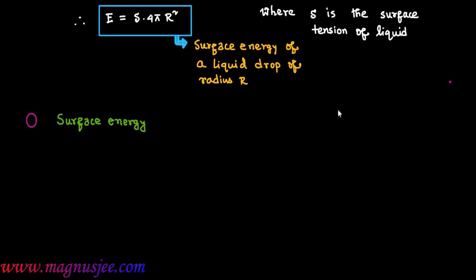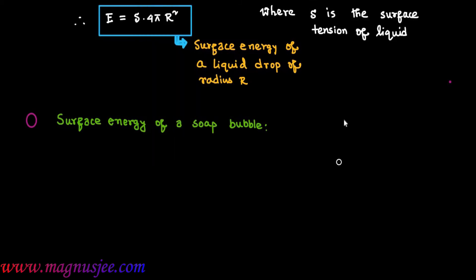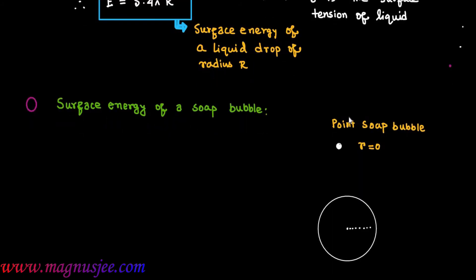Now we have to find the expression for the surface energy of a soap bubble. In the diagram, we first consider a point soap bubble of initial radius small r equals 0. Now it is blown into a large soap bubble of radius capital R — a point soap bubble blown into a soap bubble of radius capital R.